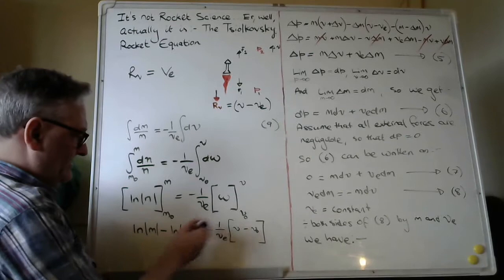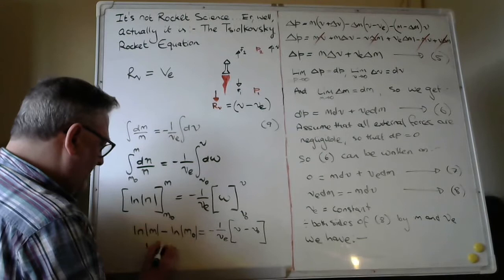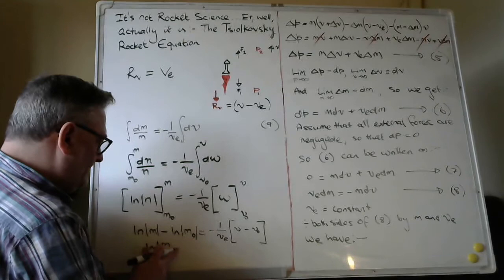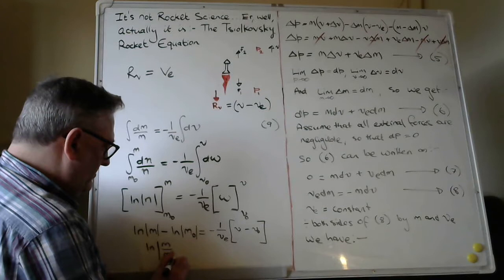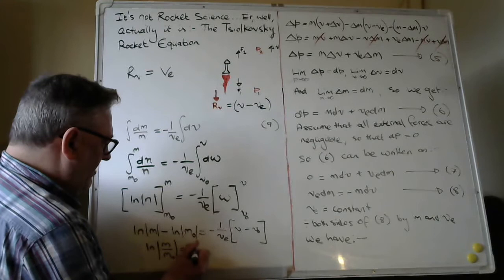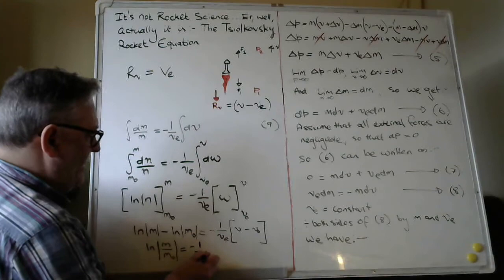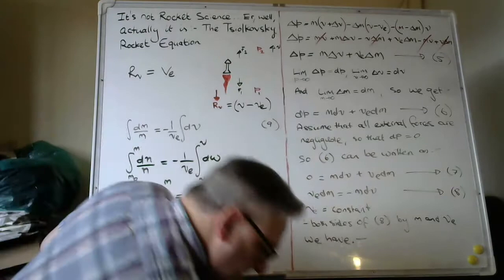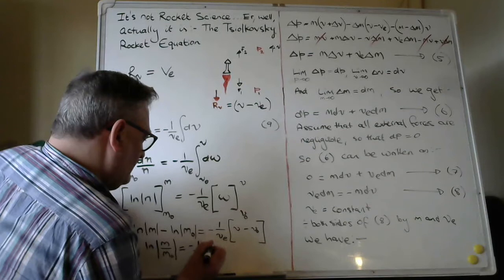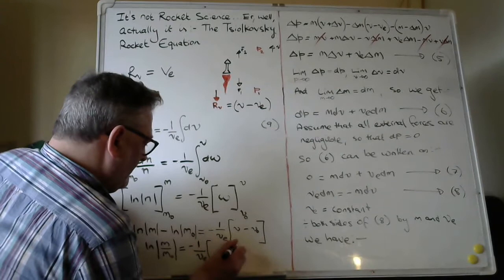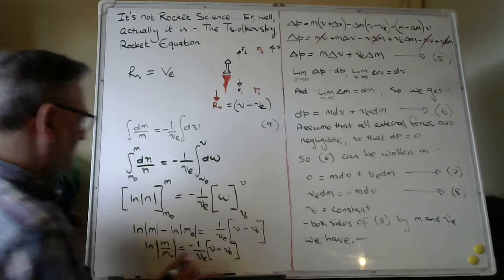Right. Well, we can simplify this a little more. And what we get is log of M over M nought equals minus one over VE times V minus V nought. Okay, well, we're not far away from the final answer now.